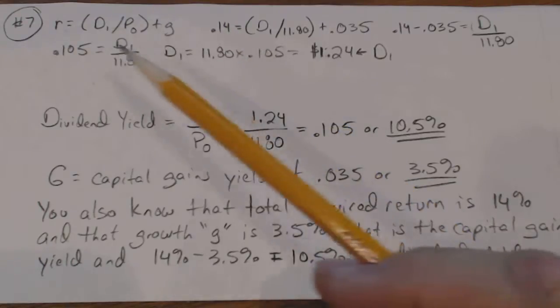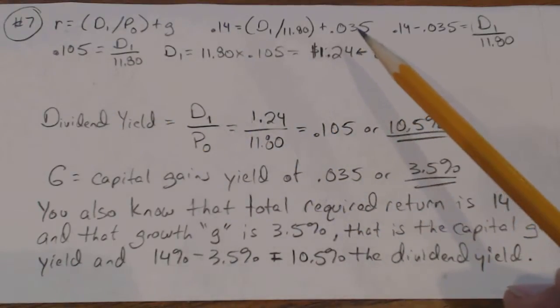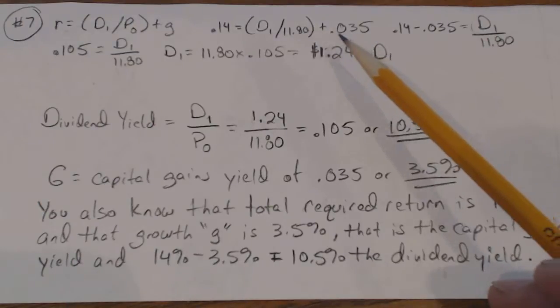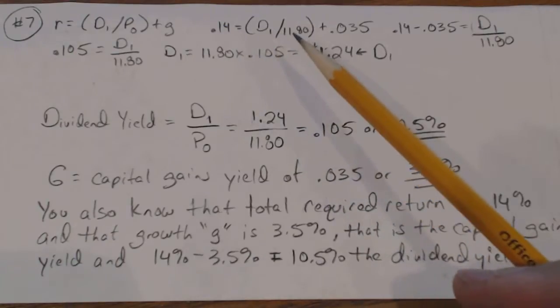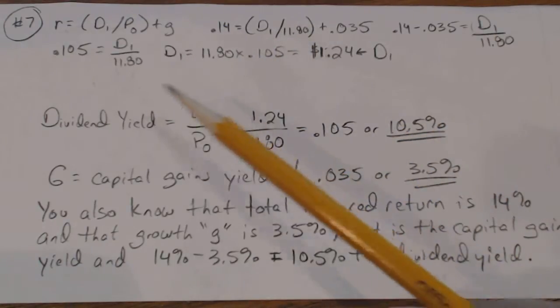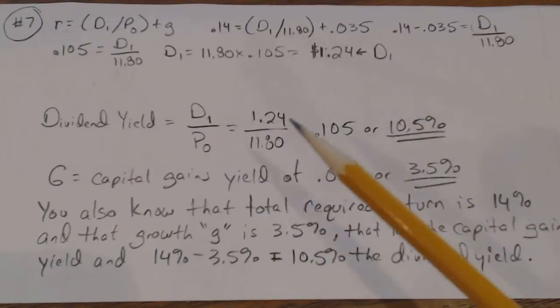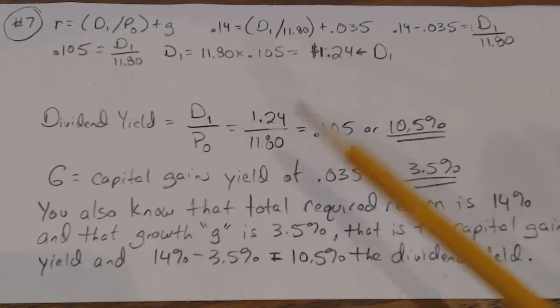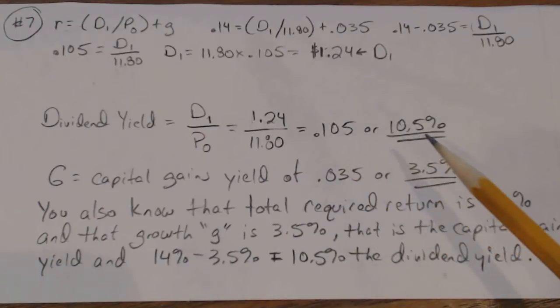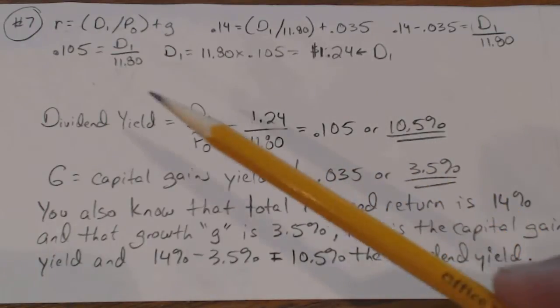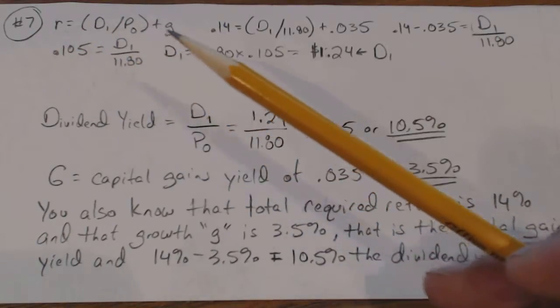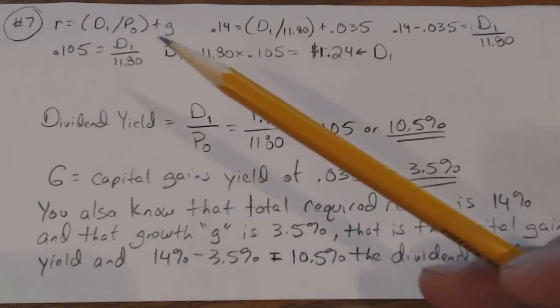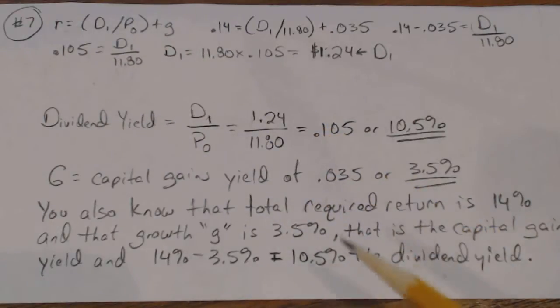Okay, so R is 14%, and you know that this is 3.5%, the G, which is the capital gains yield. You can just subtract 3.5% from 14, or you can go through the calculations of knowing what the price is, figure for D1, and so on. But then all you do is plug D1 back in over the price to get the 10.5% rate anyway. So it's good just to know that R is the overall required return. This is the dividend yield. This is the capital gains yield. If you've got two of these, you can get the other one.